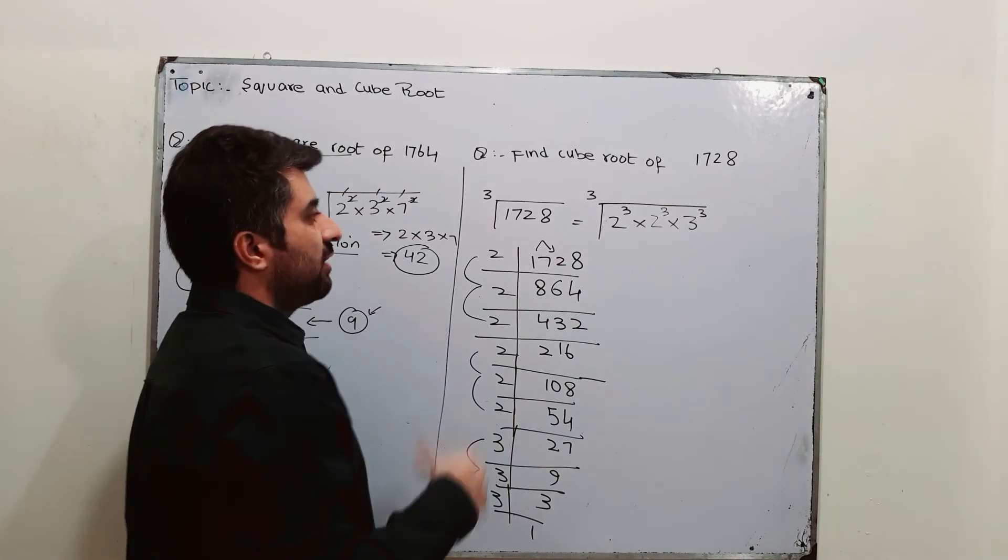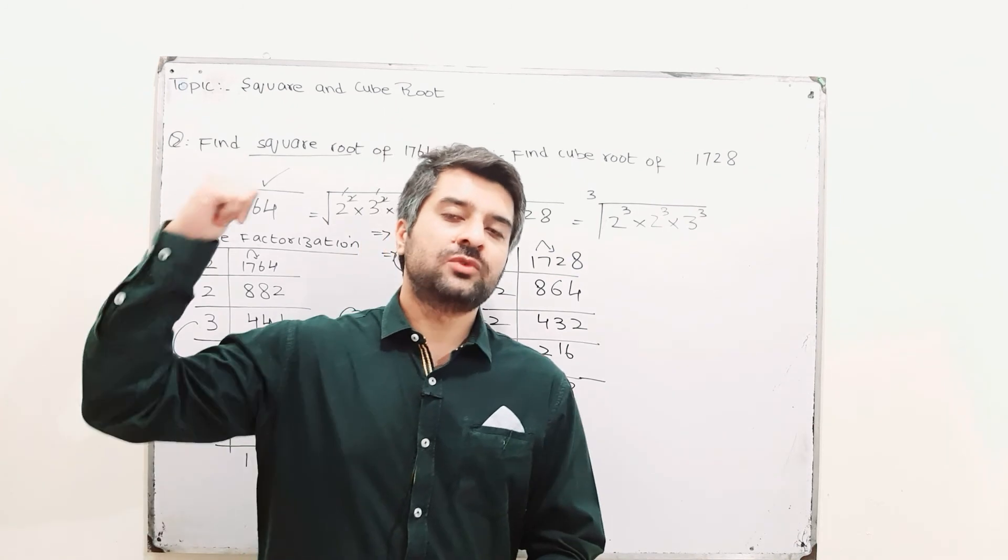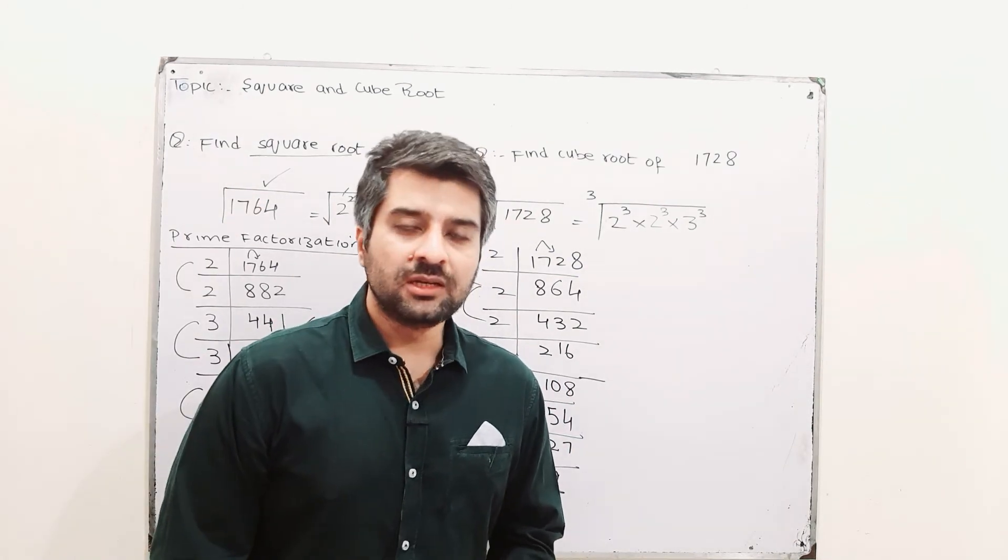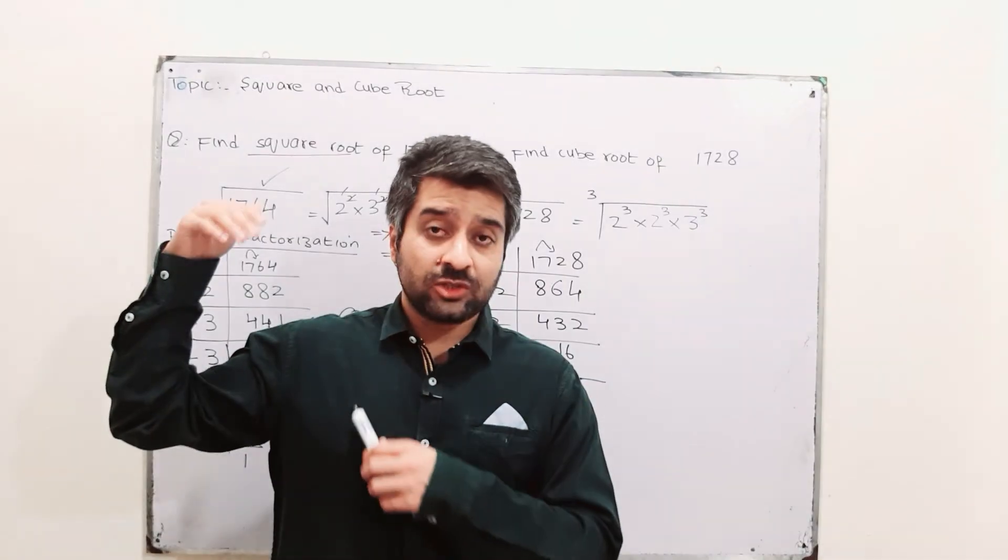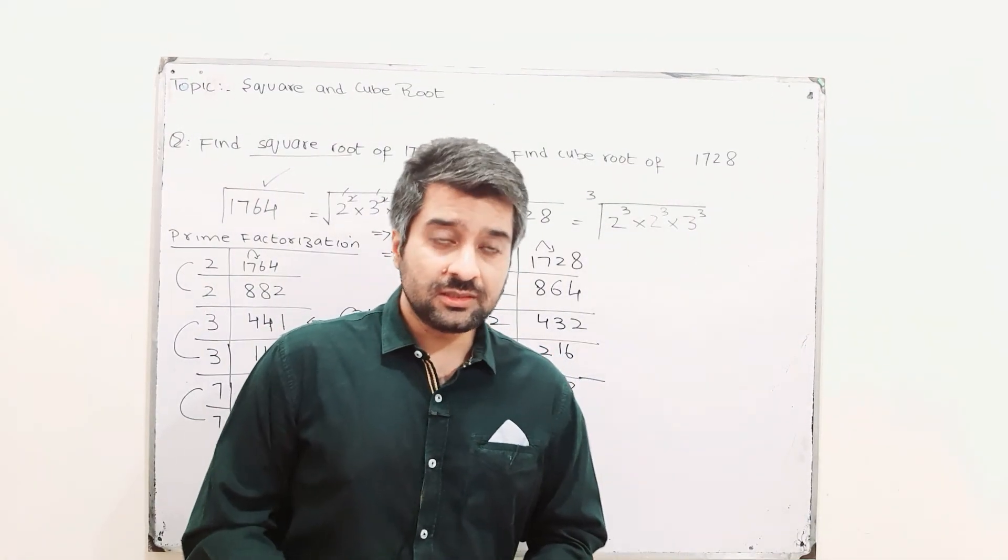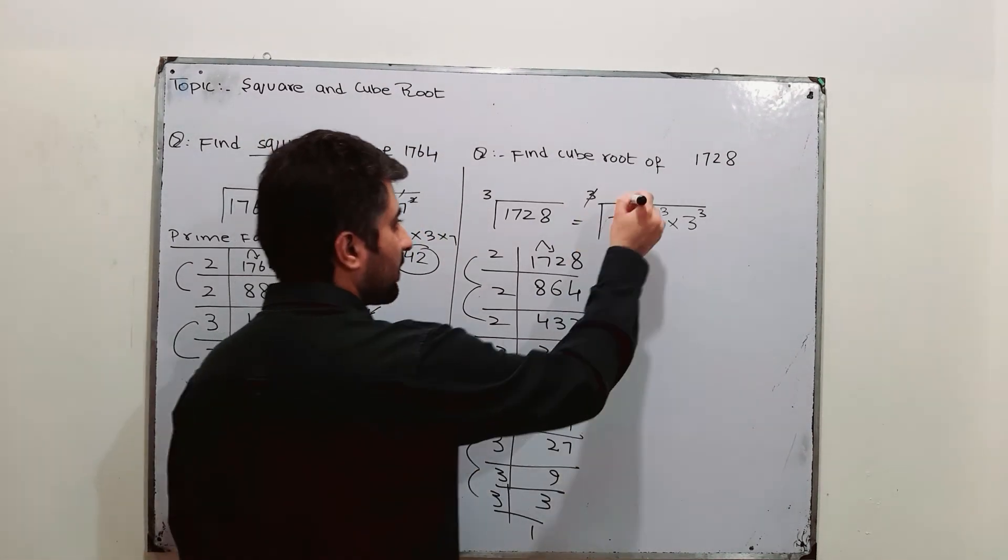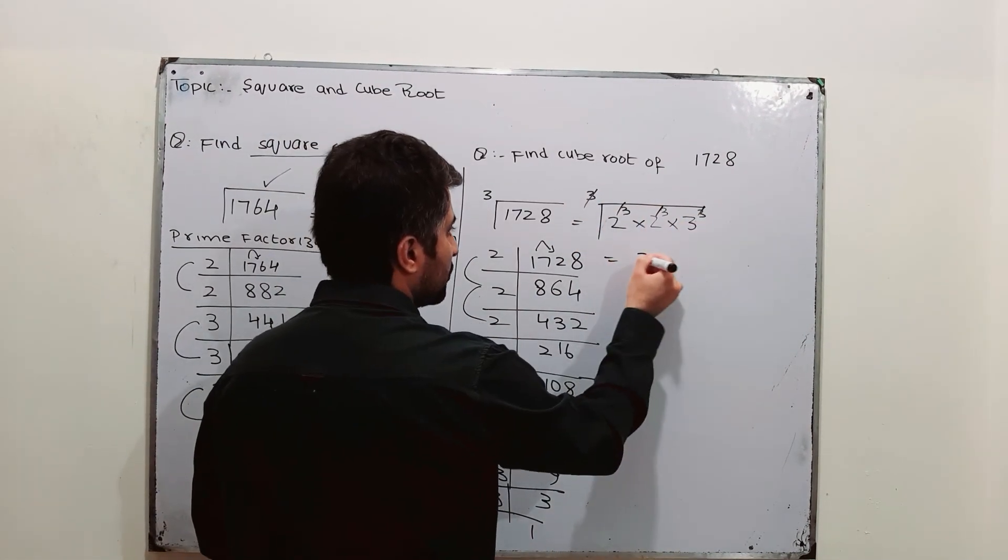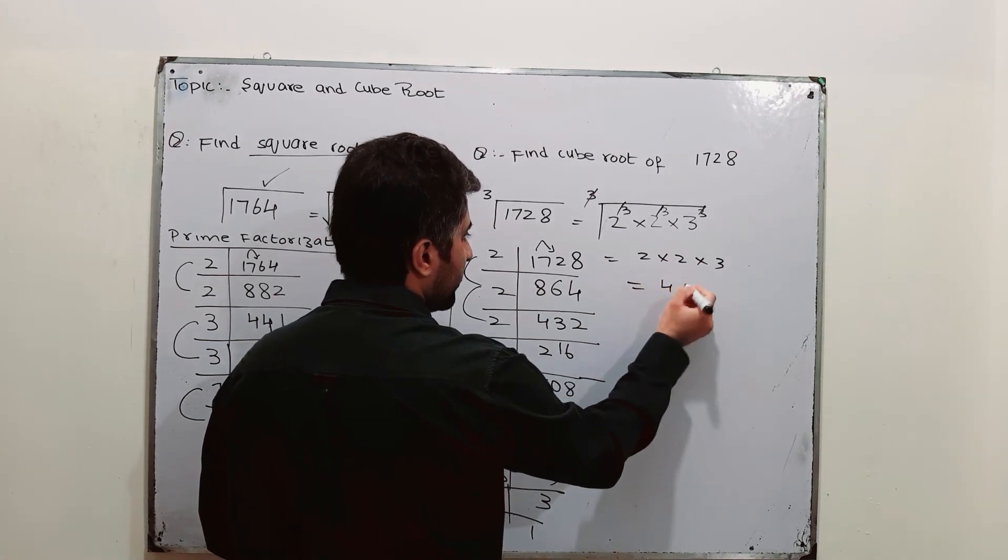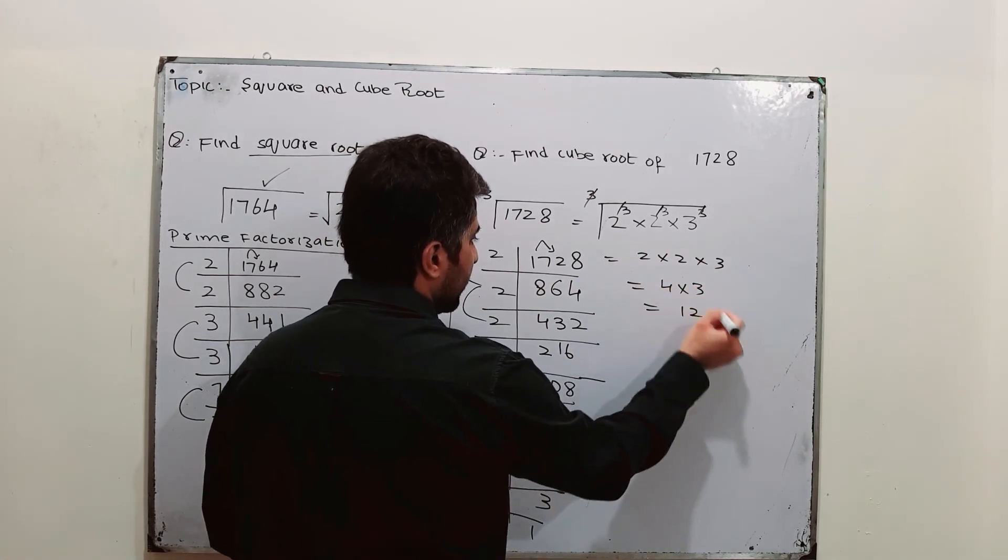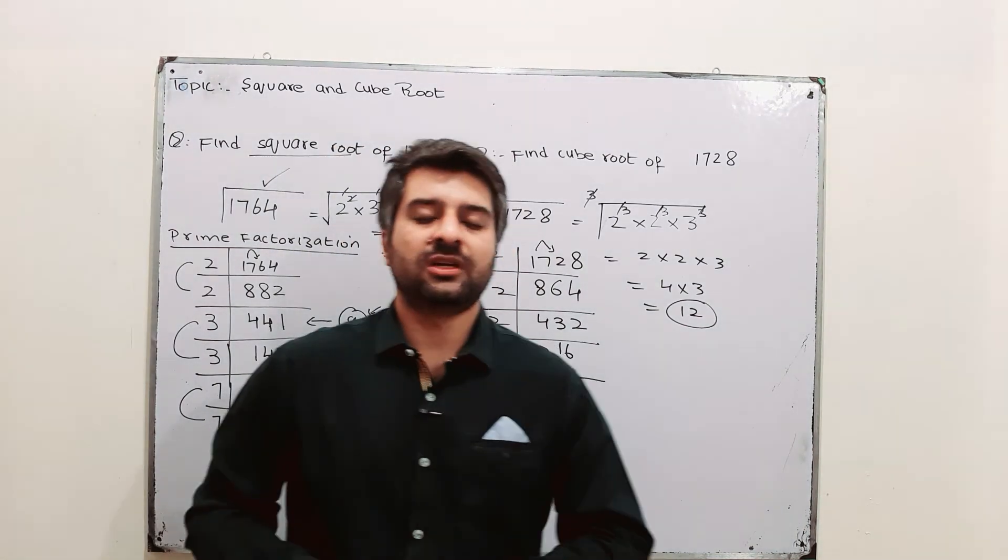So, while finding cube root, write the numbers in cube form. While finding square root, write the numbers in square form and as square root cancel each other, cube and cube root will cancel each other. So, 2 into 2 into 3, 4 into 3 that is 12. So, 12 is basically cube root of 1728.